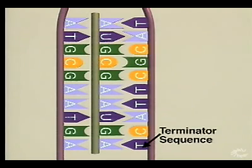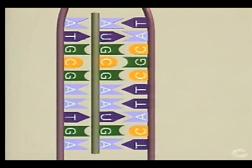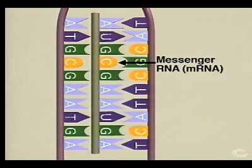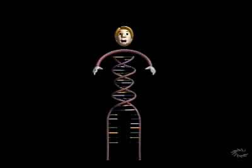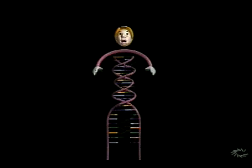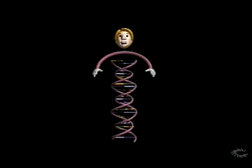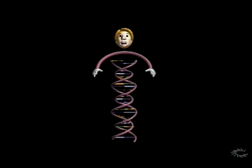Now the enzyme reaches a termination code, which indicates the transcription process is over. The new RNA strand, messenger RNA, or mRNA, leaves the nucleus. The DNA reforms using the original hydrogen bonds with the nucleotides on the opposite strand.